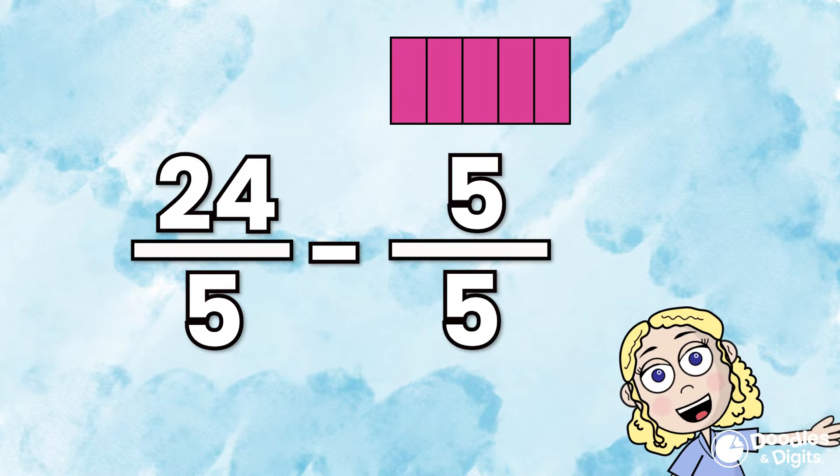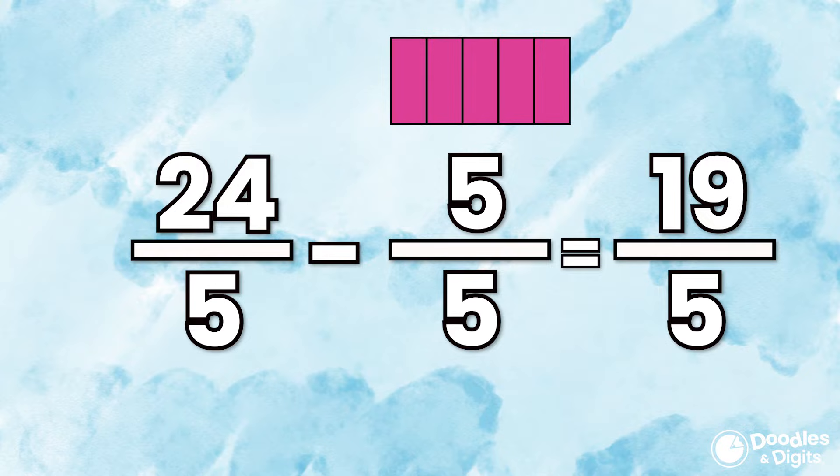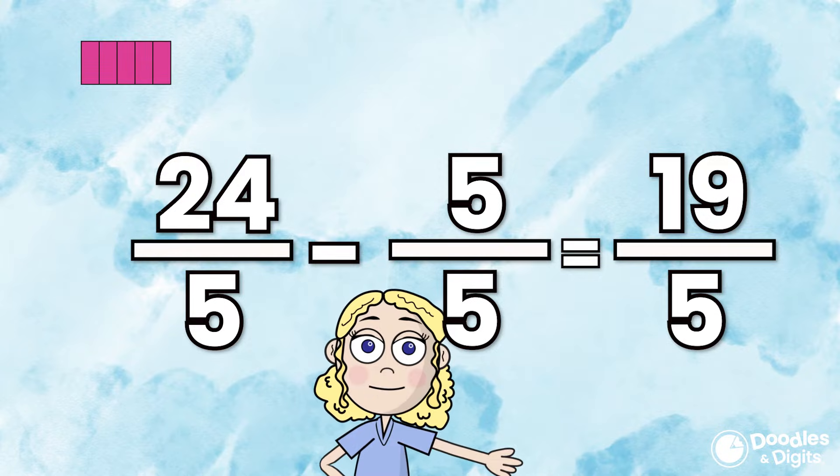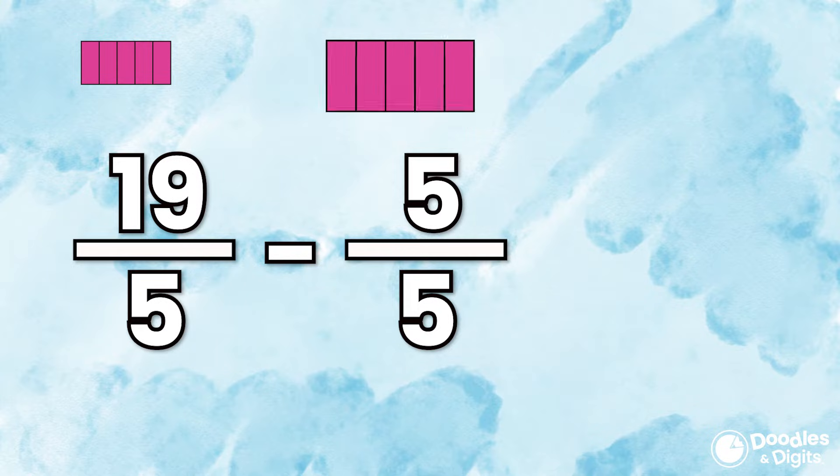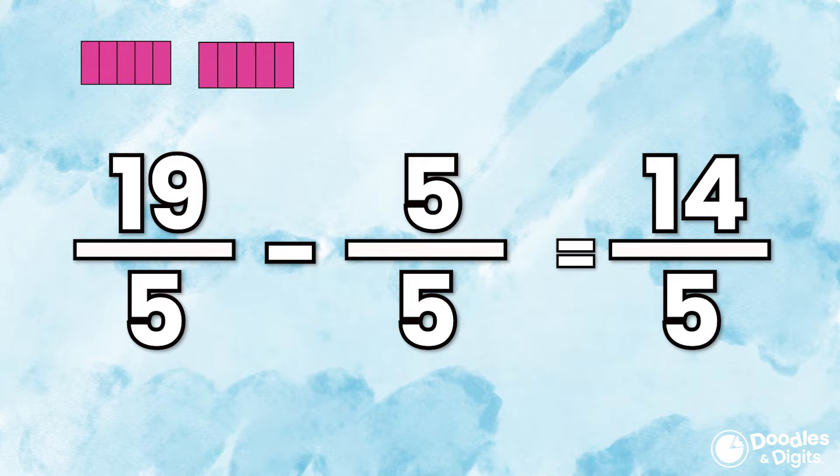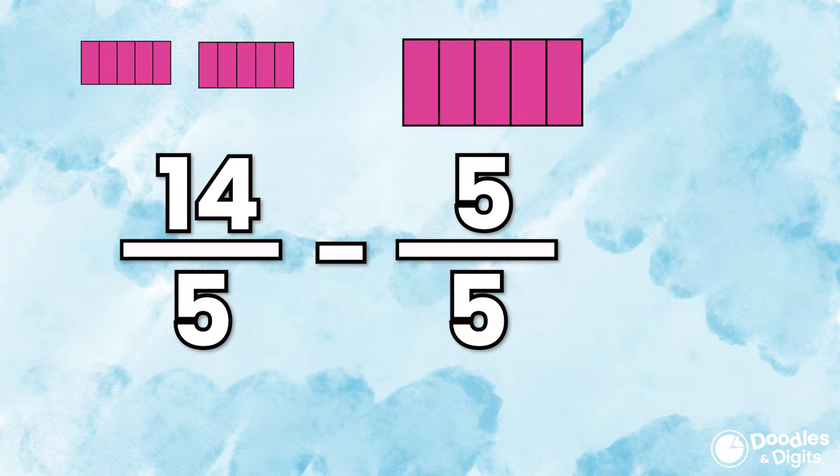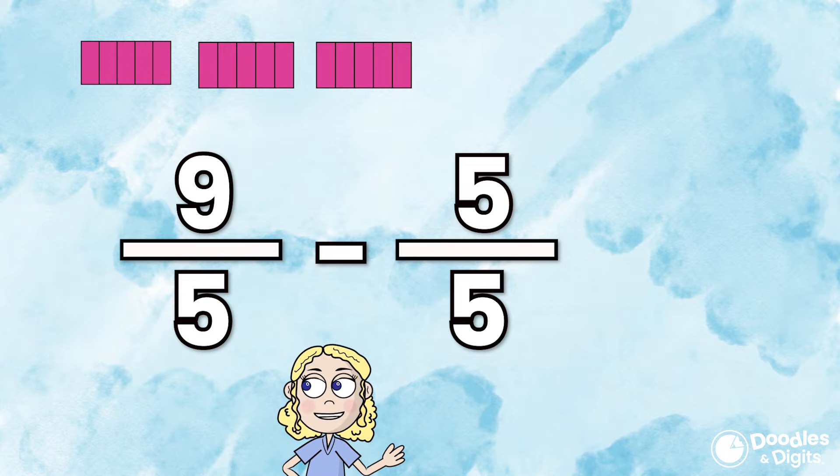24 minus 5, 19 fifths. Now we're going to take out another group of five fifths. 19 fifths minus five fifths equals 14 fifths. 14 fifths minus five fifths equals nine fifths. Finally, we're going to take out our last group of five fifths.